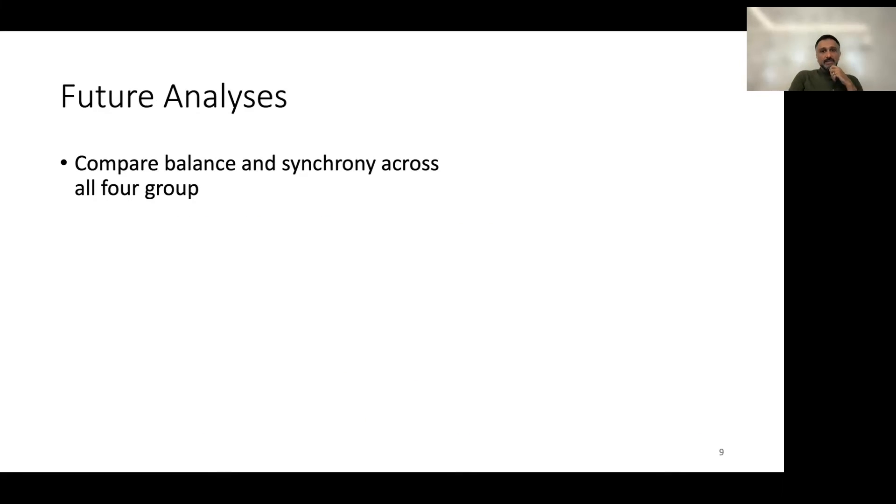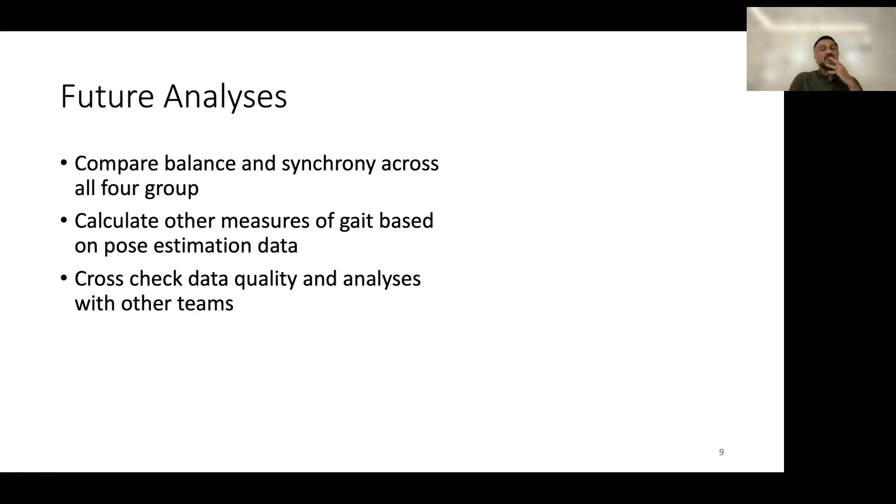So these were our preliminary analyses and by way of just letting you know what we are planning on doing next, we're going to be comparing balance and synchrony across all four groups. We are planning on calculating other measures of gait based on these pose estimation data that we have extracted. We want to cross-check the data quality and our analysis with other teams, as well as trying to use other pose extraction software out there and try to cross-check the results with those to get more stable information out of these videos. We definitely want to follow up on remote assessment and ask folks to send in videos as much as they can. I would encourage you to reach out if you're capable of doing that, we would really appreciate it.